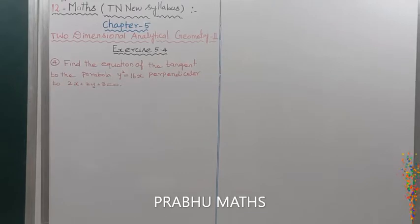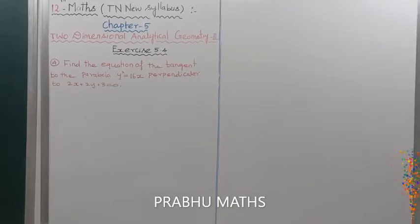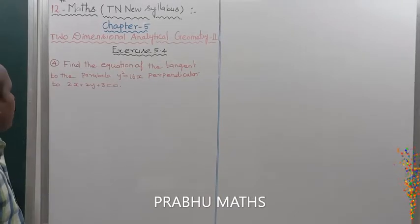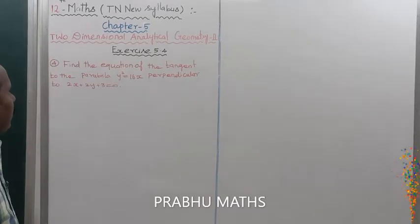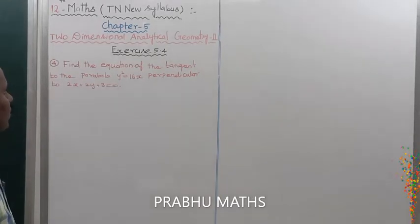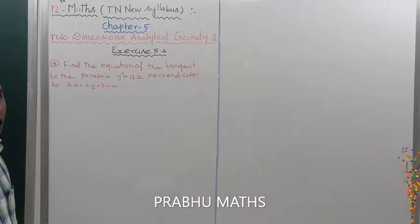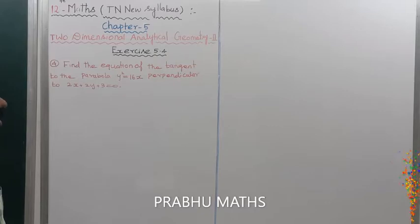Fourth sum: find the equation of the tangent to the parabola y² = 16x that is perpendicular to the line 2x + 2y + 3 = 0. For the tangent equation of a parabola, the standard form is y = mx + a/m.